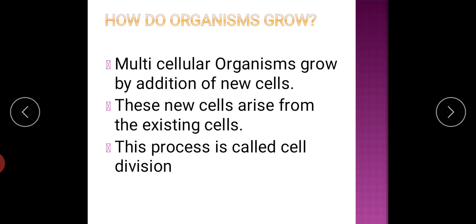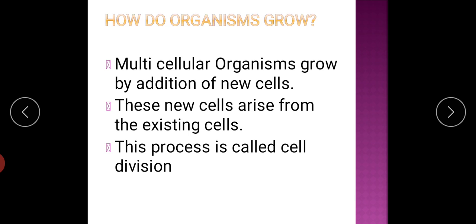This is done by a process called cell division. Once a cell reaches a certain size, it divides into two by a process called cell division.